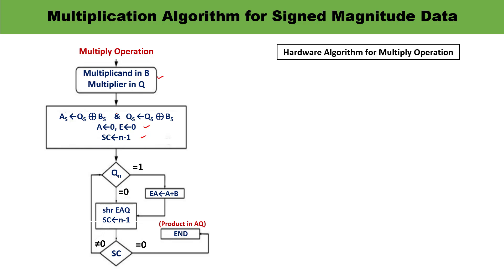Once these values are initialized, our interest is to inspect the value of QN — the rightmost bit. If the value of QN is 1, then addition is performed: A plus B — the contents of A and B are added by the parallel adder, the result is stored in register EA, and then a shift right of EAQ is performed. The sequence counter is decremented by 1 (SC minus 1). If the value of QN is 0, no addition is done — only the shifting operation is performed and the sequence counter is decremented by 1. When the sequence counter reaches 0, that is the end of the program and the product is stored in AQ. If not zero, the same loop continues.